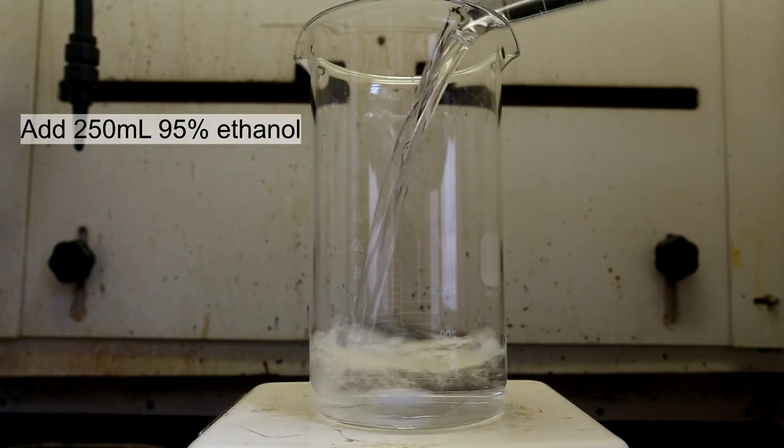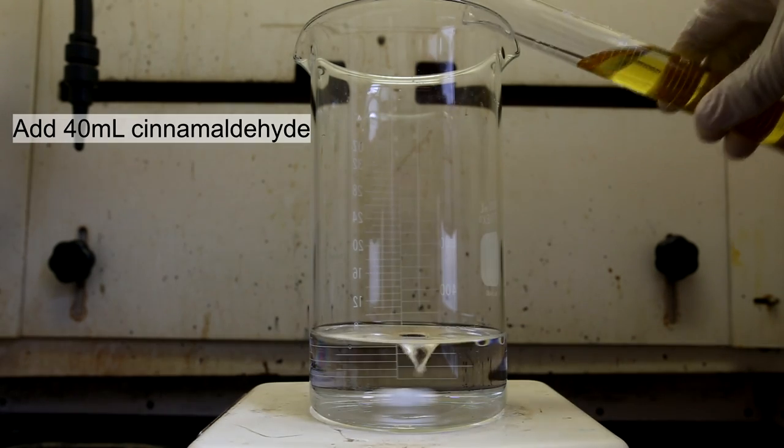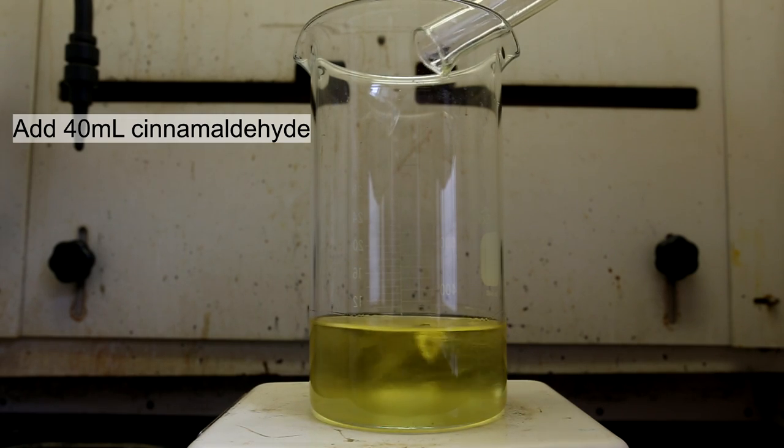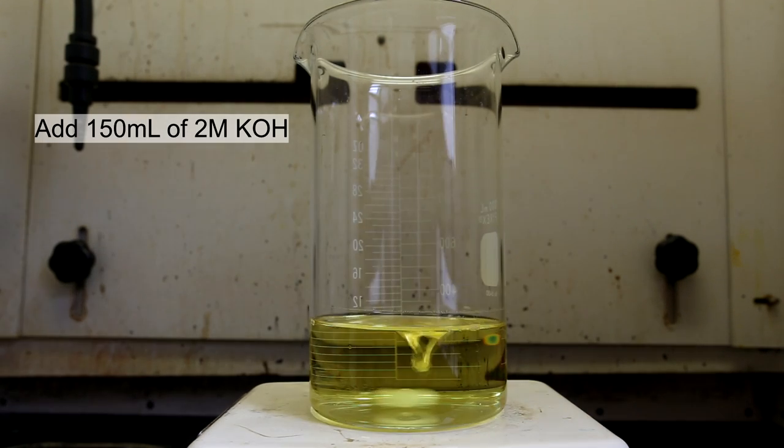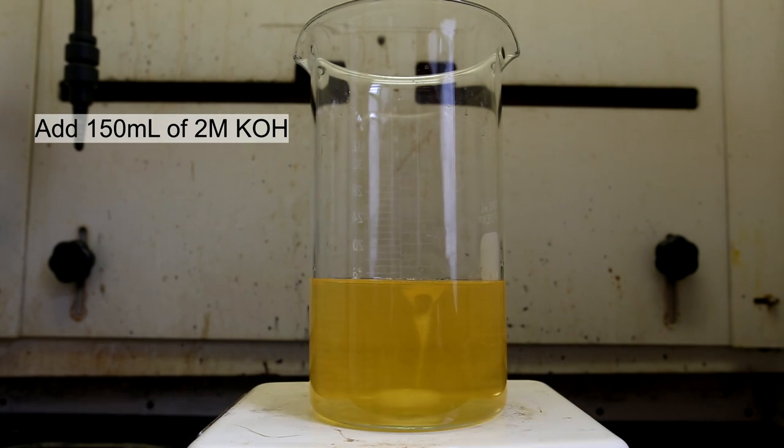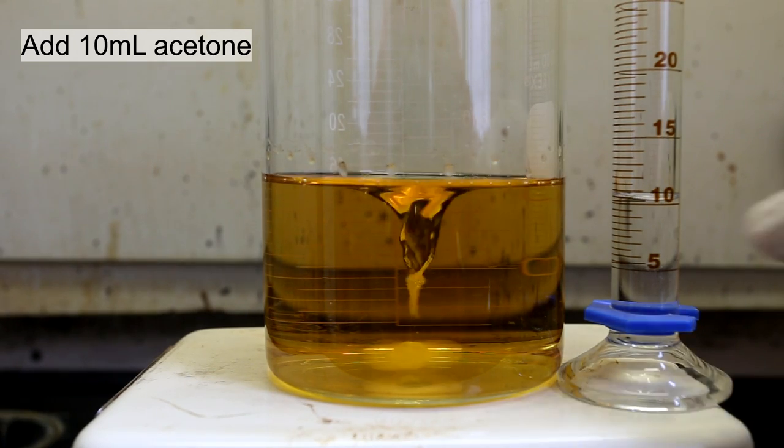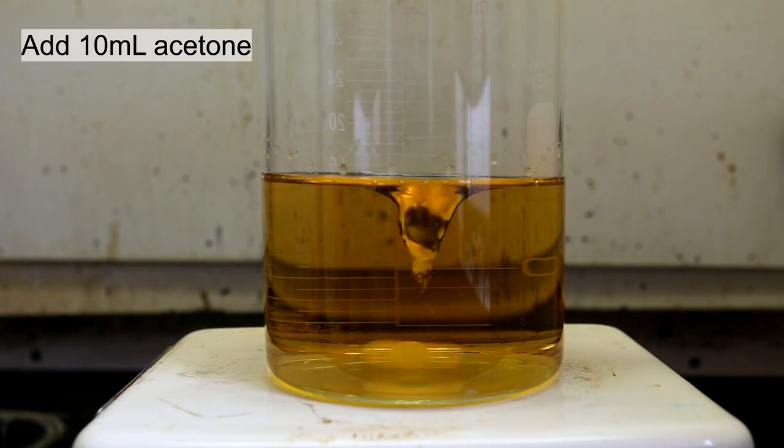Then, add 250 milliliters of 95% ethanol to a 1 liter beaker. Follow this with an addition of 40 milliliters of cinnamaldehyde, and then the 2 molar potassium hydroxide solution that we made earlier is added as well. Let the solution stir until it completely clears up. Now, to start the reaction, we add 10 milliliters of acetone.